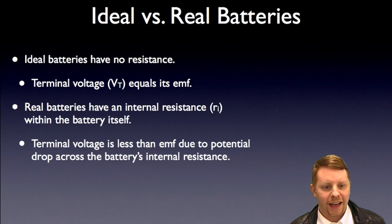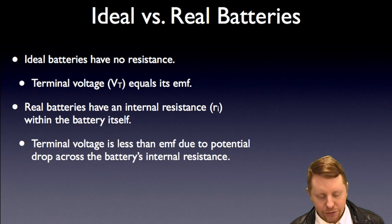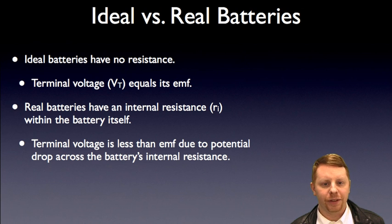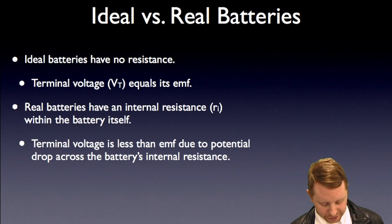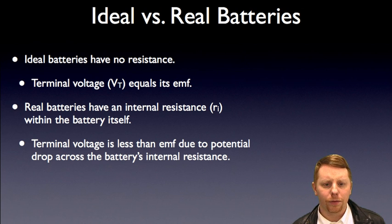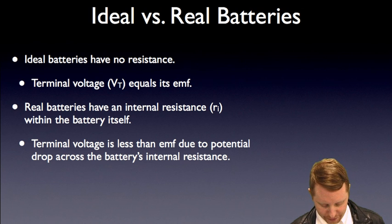Ideal versus real batteries. Ideal batteries have no resistance. They're perfect. Their terminal voltage is exactly equal to their EMF. Real batteries, on the other hand, have some fixed amount of internal resistance. They're not a perfect conductor. They have a little bit of resistance in there, and because of that, the terminal voltage across a real battery is a little bit less than the battery's EMF.